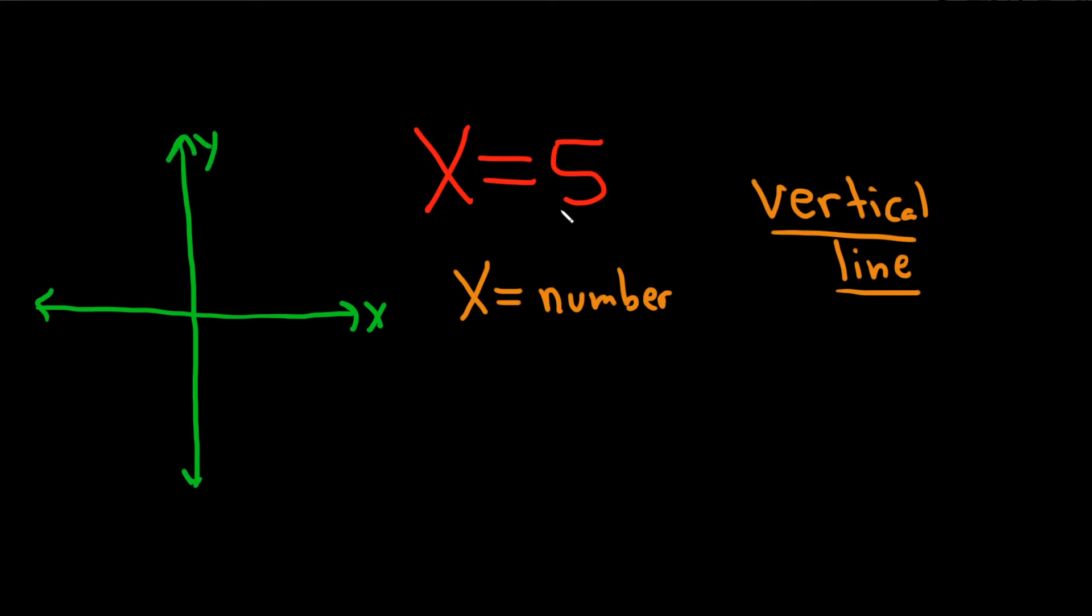And then you want to go to x equals 5, so I'll just use tick marks. 1, 2, 3, 4, 5, and I'll put a dot. And then you just make a line that goes up and down, which is a vertical line like this. So just like that.